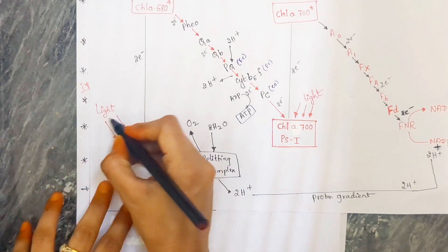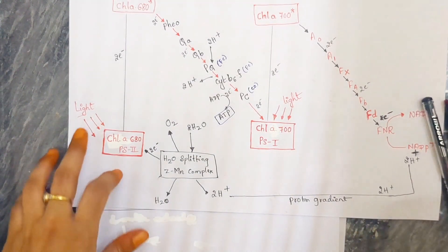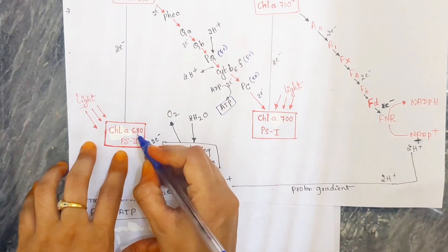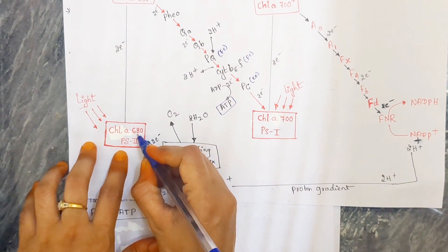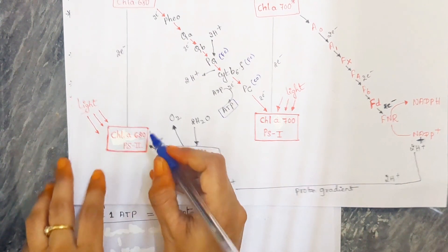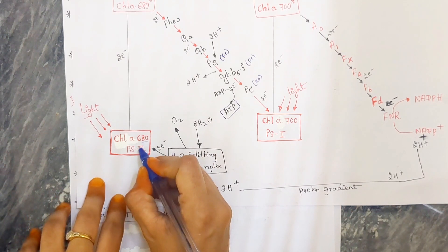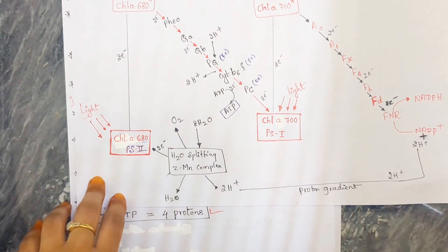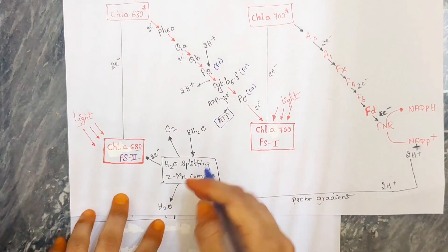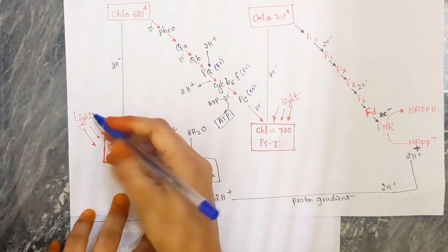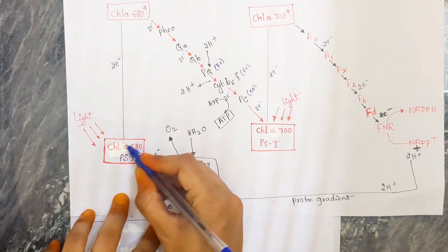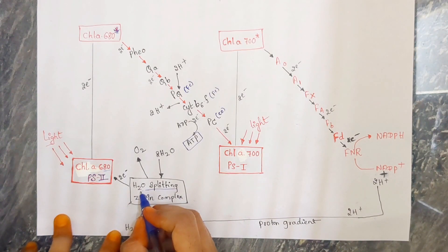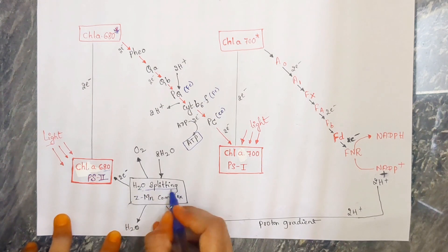First, light — the radiant energy, the light energy — is going to be absorbed by the chlorophyll, which absorbs 680 nanometers of wavelength. That is in photosystem 2 — it starts with photosystem 2. By absorbing this light, the chlorophyll gets excited. Then photolysis of water occurs — that is, the splitting up of water.